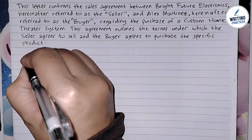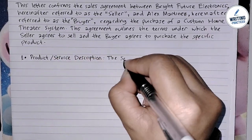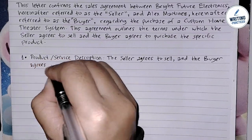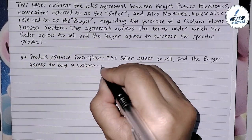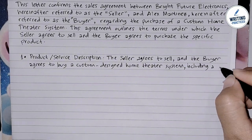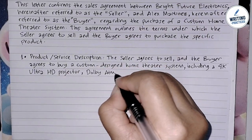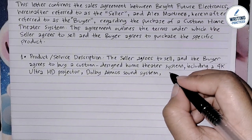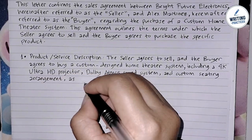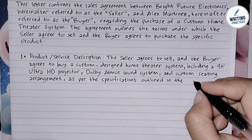In the next paragraph, write the terms of the agreement using numbering to keep them organized. The first point is the product or service description. Describe the product or service being sold, including specific details that outline what the buyer is purchasing. For example: '1. Product or Service Description: The seller agrees to sell and the buyer agrees to buy a custom-designed home theater system, including a 4K Ultra HD projector, Dolby Atmos sound system, and custom seating arrangement, as per the specifications outlined in the attached document.'